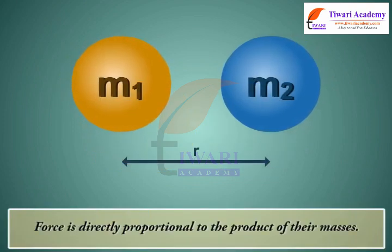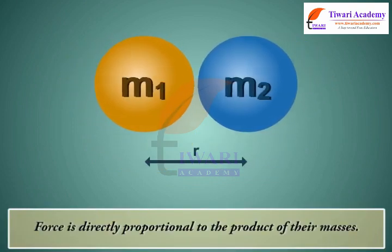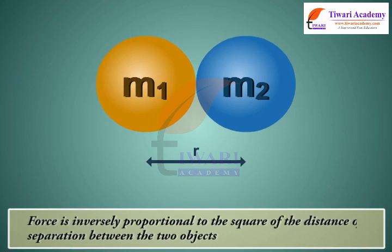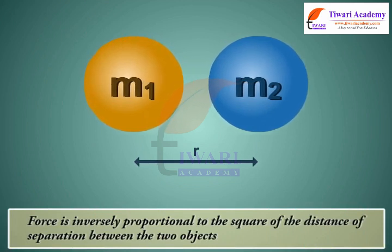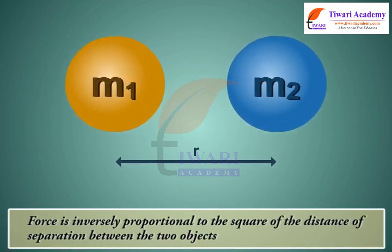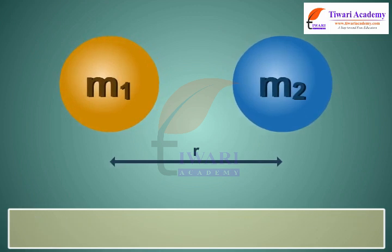Force is directly proportional to the product of their masses: F ∝ M1 × M2. Force is inversely proportional to the square of the distance of separation between the two objects: F ∝ 1/R².